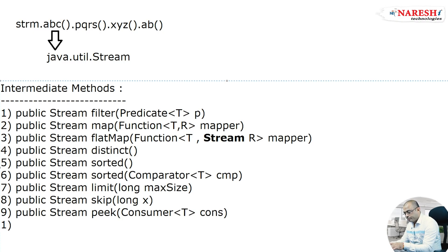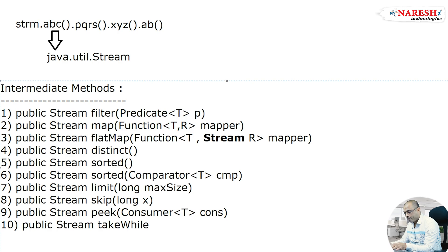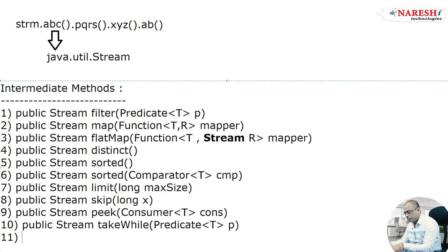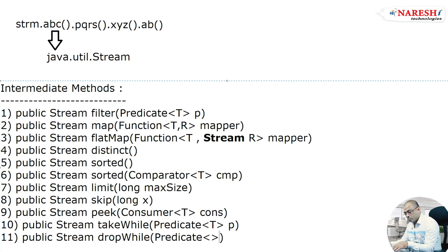Number 10 and number 11 — both methods came from Java 9. One is takeWhile, which takes a Predicate, and another one is dropWhile. So, in total we have 11 methods, and all these 11 methods represent intermediate operations.